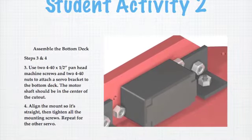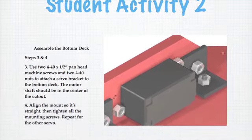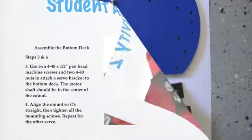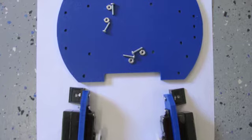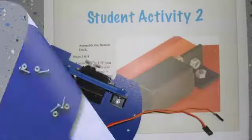In the second student activity, they're going to mount that servo assembly with the mount using L-brackets and these materials to the bottom plate. And it'll look like that when finished.